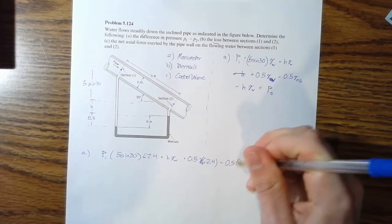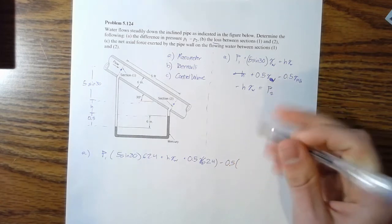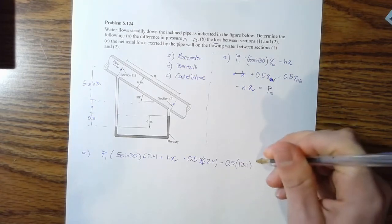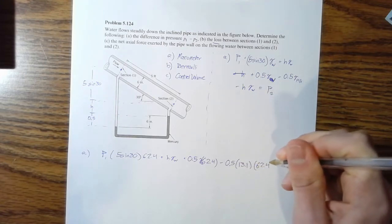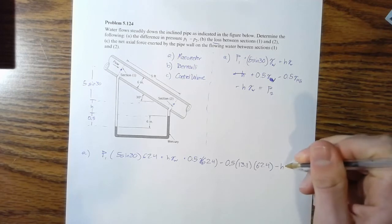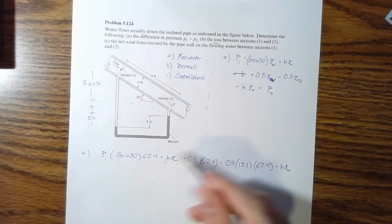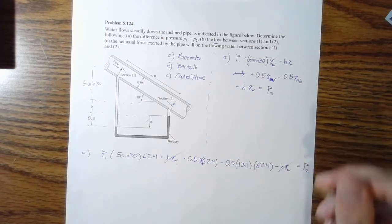And for gamma of mercury, we know its specific weight is 13.1. Multiply that by 62.4 minus H gamma water. So notice this term and this term will cancel out and we end up at P two.